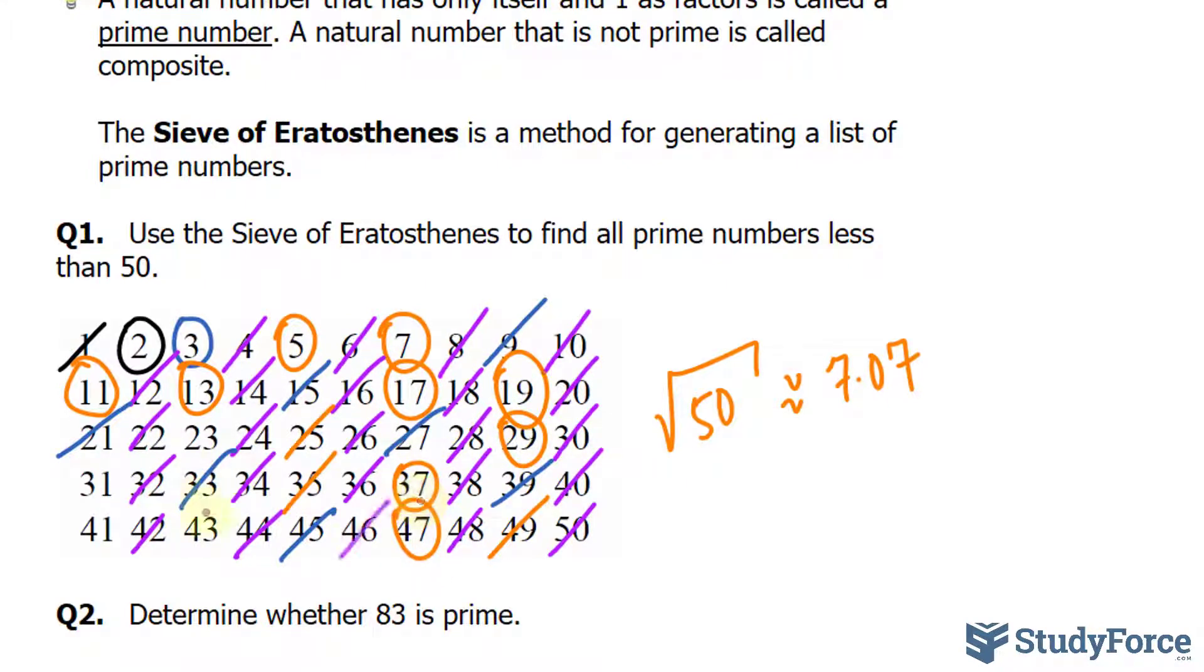It is impossible to have a composite number of the form A times B, where A and B are 11 or greater, with a product less than 50.